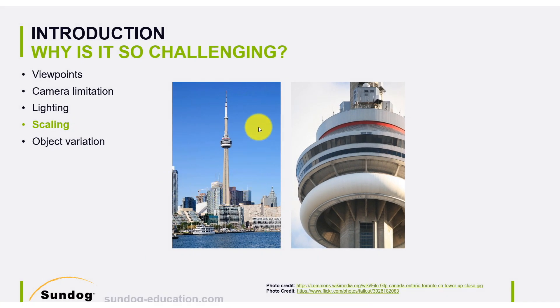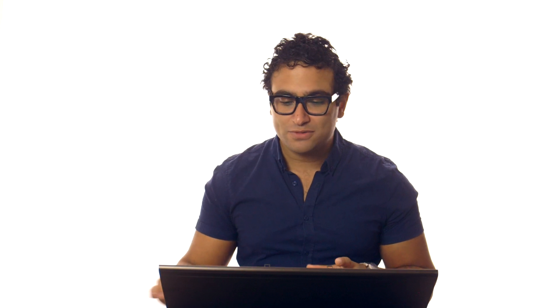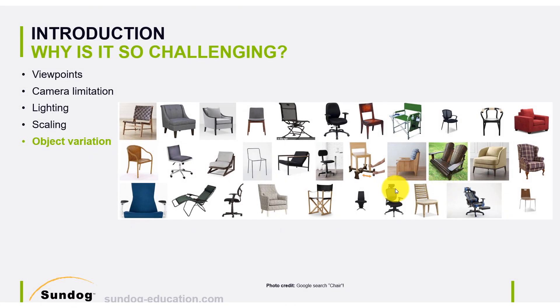The next challenge is scaling. What if we zoom in and take a close-up image? For example, classifying pedestrians — we might have a tall pedestrian or a short one, a nearby car or a far-away car. How can a machine learning algorithm classify all of these? That's the power of advanced computer vision algorithms, and it's one of the challenges posed to them.